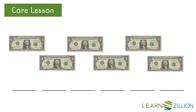Here there are six one dollar bills. How many cents is that? Let's skip count to find out. Remember, each one dollar bill is worth one hundred cents, so skip counting by hundreds will tell us how many cents there are.